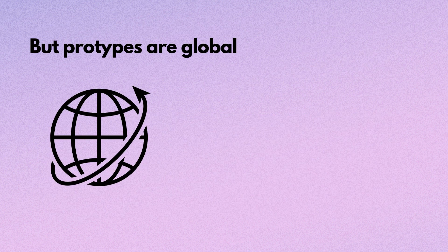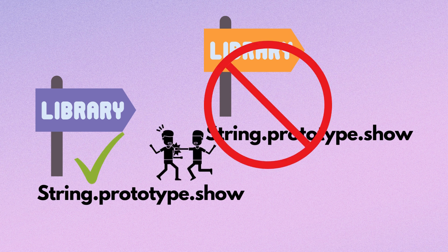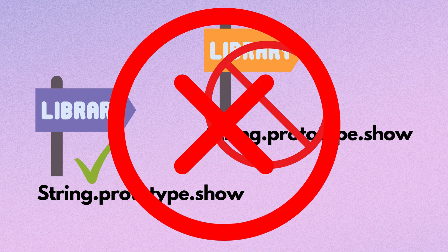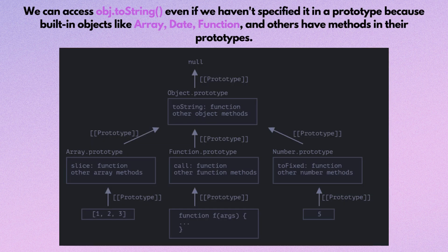Usually, to keep the right constructor, we can choose to add or remove properties to the default prototype instead of overriding it as a whole. But prototypes are global, so it's easy to get a conflict. If two libraries add a method string.prototype.show, then one of them will be overriding the method of the other. So generally, modifying a native prototype is considered a bad idea.